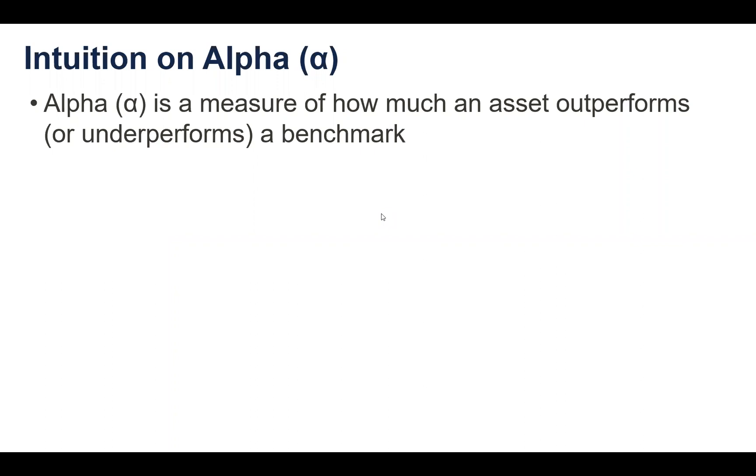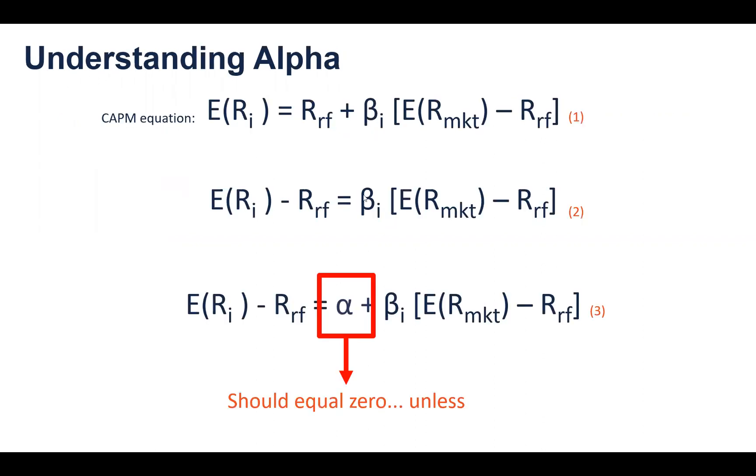All right, today we are going to be talking about alpha. Alpha is a measure of how much an asset outperformed or underperformed its benchmark. I'm going to try to give you an intuition behind it using the CAPM model, and to understand it, it's not actually that difficult.